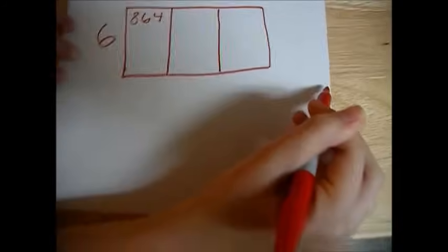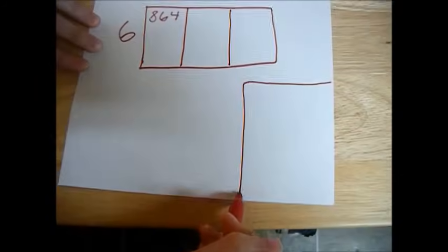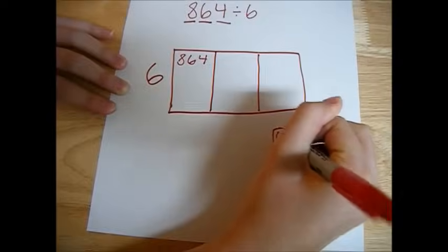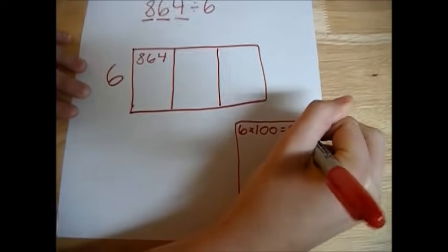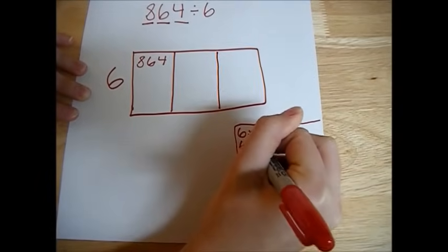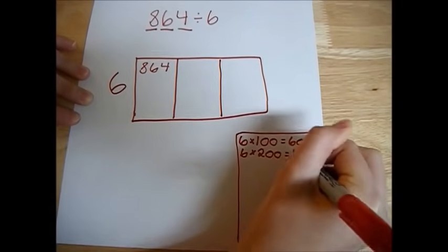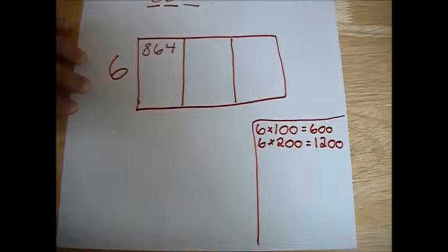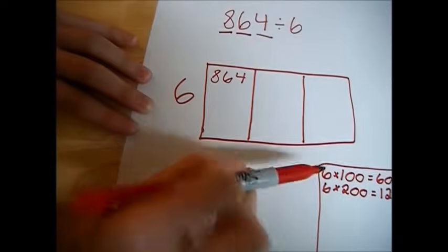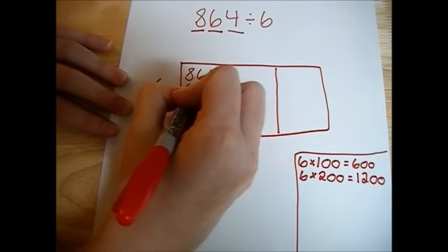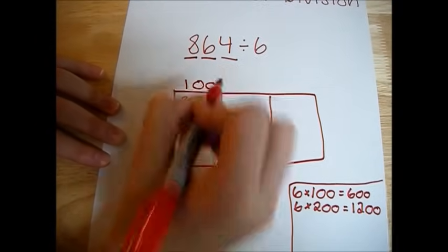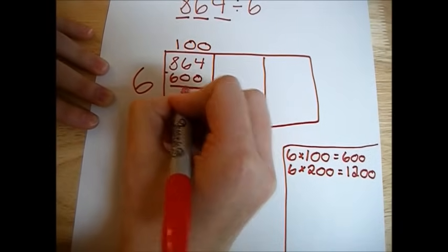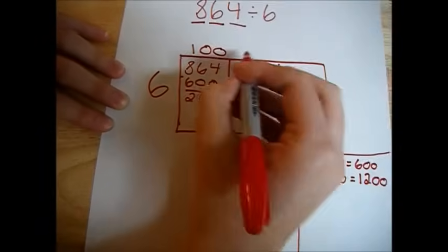So we start with the hundreds. Let's make our help box. 6 times 100 gives us 600, and 6 times 200 gives us 1,200. That's too high, so we go back to the last one we had that was below, which was 600. We place 600 in the box with 100 on top. 6 times 100 is 600. We subtract and get 264, which we move to the next box.